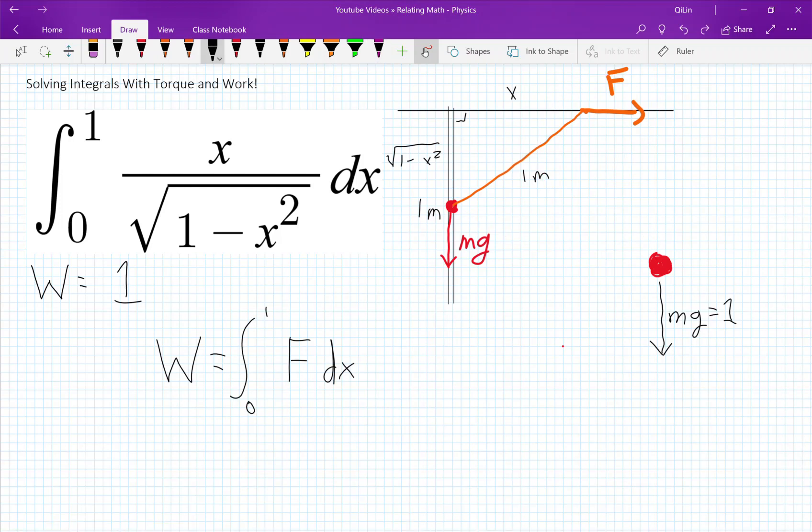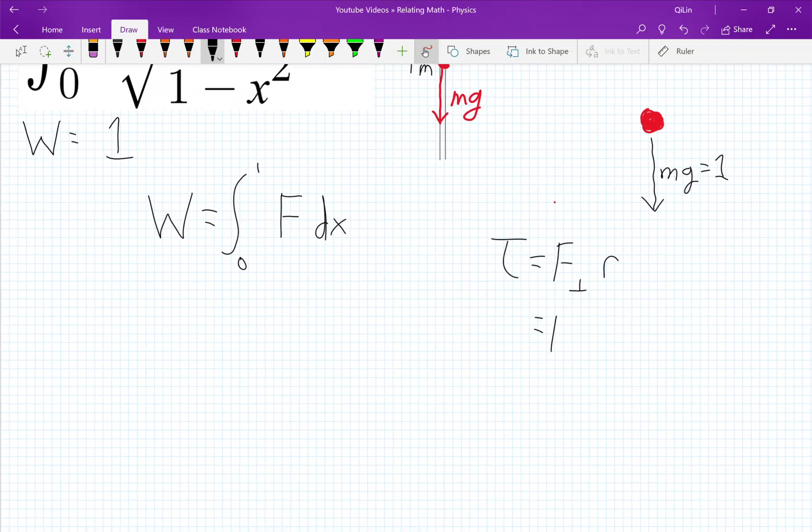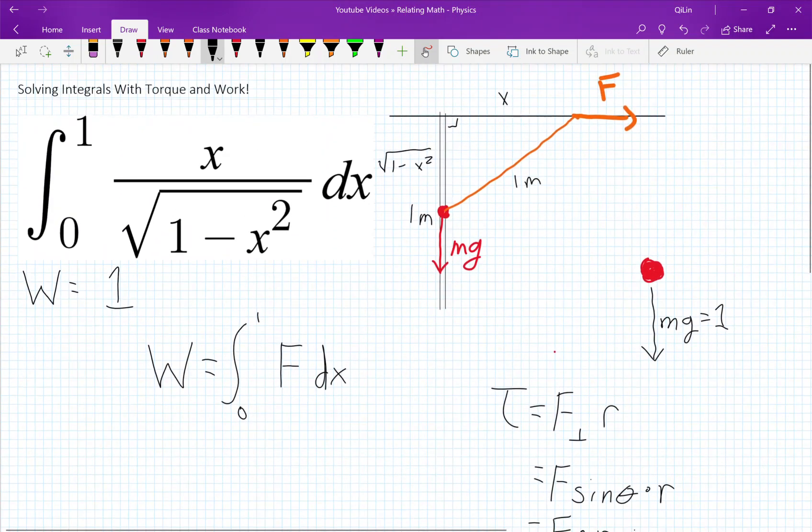Now just a quick refresher. If you forgot torque is equal to the perpendicular force times the radius of the lever arm. The perpendicular force is equal to the force times sine of theta times r. Which is equal to the force times r sine of theta. And that would just be equal to the force. And r sine of theta is just the perpendicular component of r. So you can write that as f times the perpendicular component of r. And r here, the lever arm, would be our string.